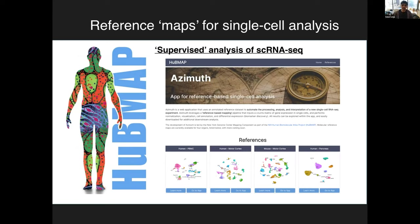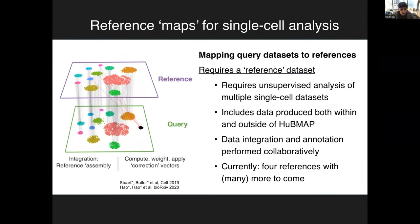That's the tool we've built: it's called Azimuth, and the goal is to enable reference-based single-cell analysis. For Azimuth to work, a reference dataset must first be available — someone has to build a reference through unsupervised analysis of multiple single-cell datasets. That's exactly what we've been doing in HuBMAP, particularly through the Hive components. The reference maps include data both from within HuBMAP and from the broader literature. This data integration and annotation process is performed collaboratively.